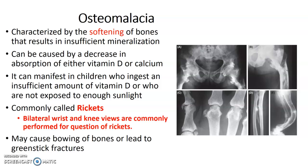Osteomalacia, sometimes called rickets, is the softening of bones, usually caused by decreased absorption of vitamin D or calcium. It can manifest in children who ingest insufficient vitamin D or are not exposed to enough sunlight. At our clinical site, our protocol for a rickets request uses bilateral wrists and bilateral knees.